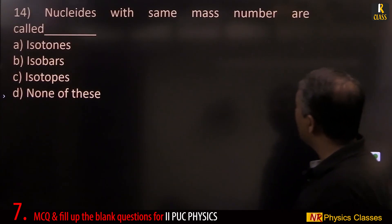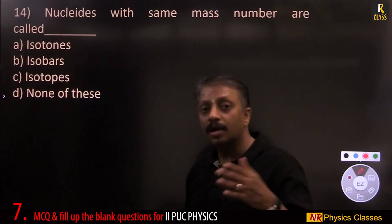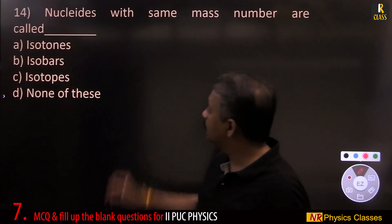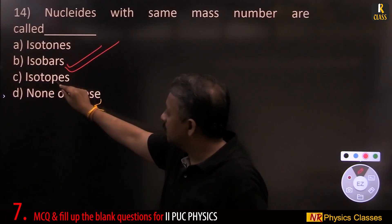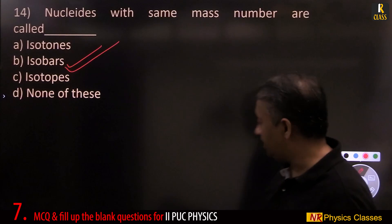Nuclides with the same mass number is isobar. Same atomic number is isotope. Same mass number is isobar. This is same neutron.